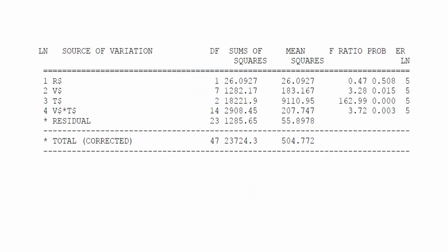Let us see the standard ANOVA table. In this table, you can see variation at different levels — among replications, among varieties, and among treatments. You can also compare variety-by-treatment interaction. The column DF stands for degrees of freedom, which equals the number of observations minus one. The table also calculates the sum of squares, mean square, F-ratio, and probability level, which is used to test whether the F-value is statistically significant.